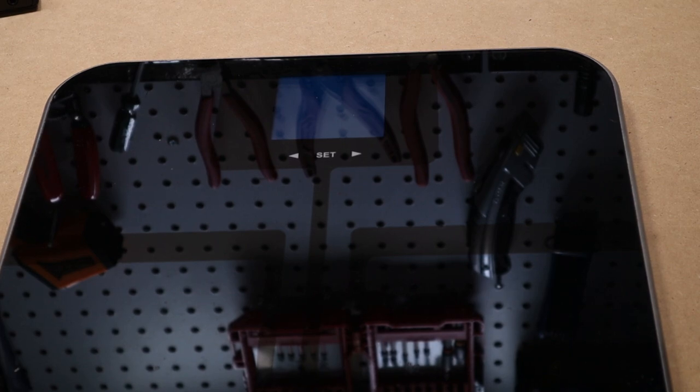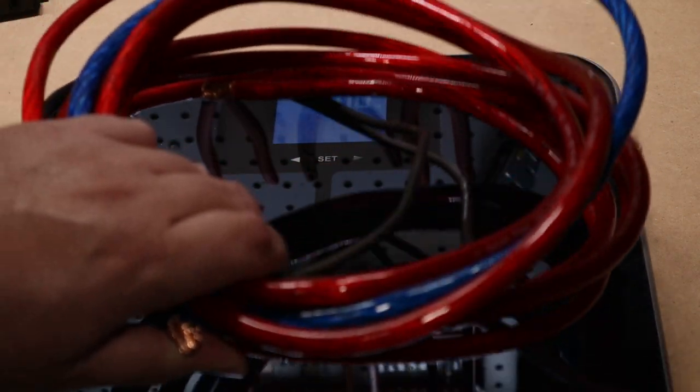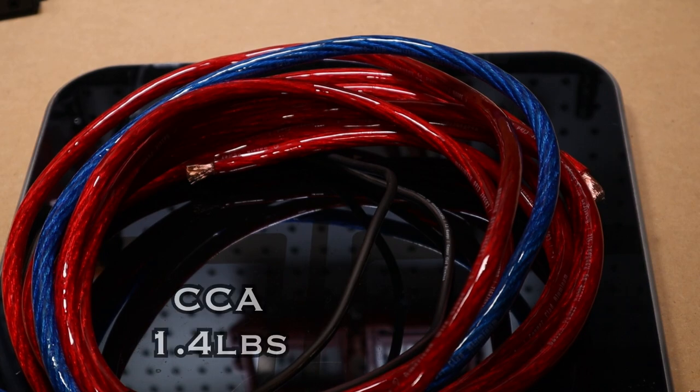The other way you can tell is weight. So let's weigh these. I got both sets of wires bundled up, let's weigh them and see how much difference we actually have. It is hard to see, but it's 1.4 pounds.